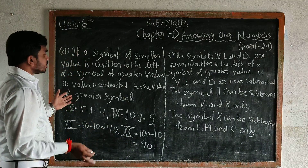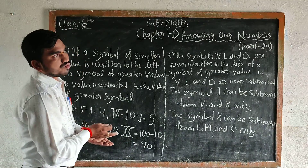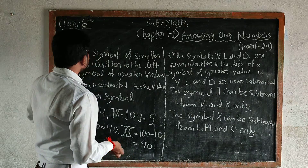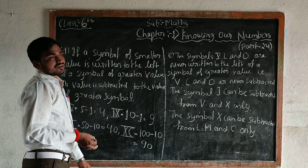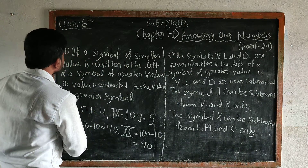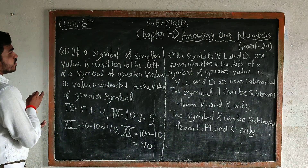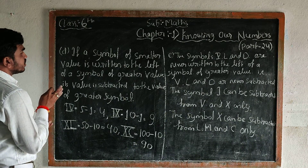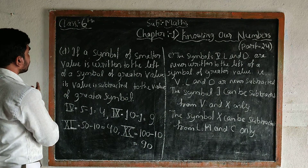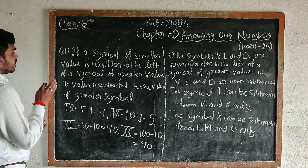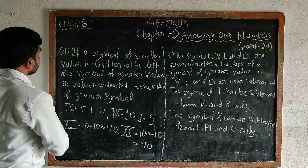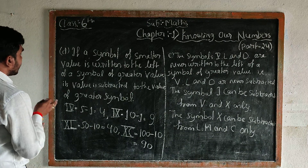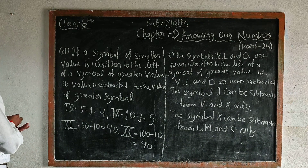Here are the rules of Roman numbers. The rule is: if a symbol of smaller value is written to the left of a symbol of greater value, its value is subtracted from the value of the greatest symbol.